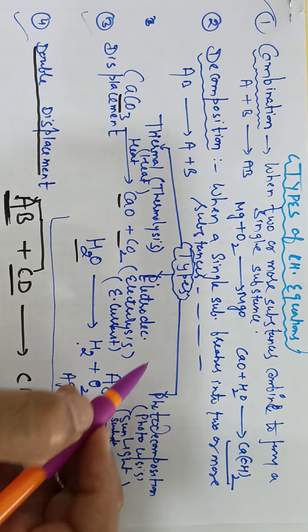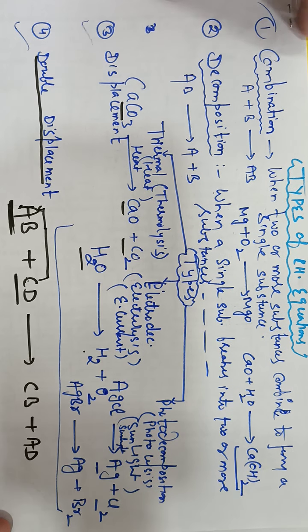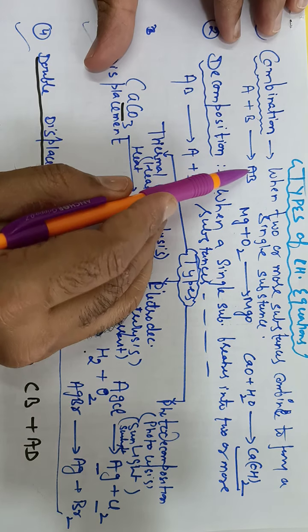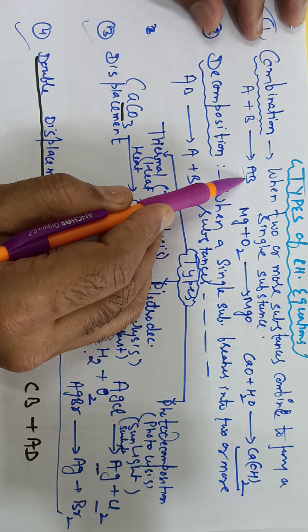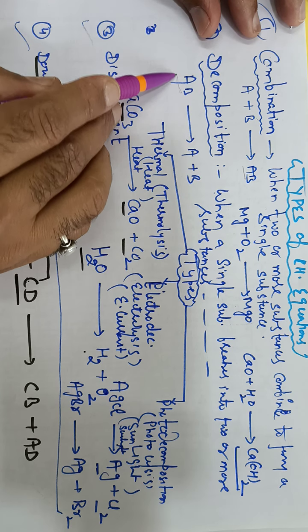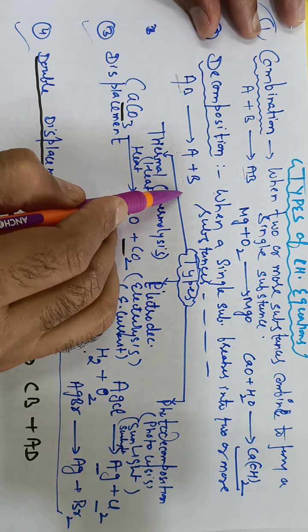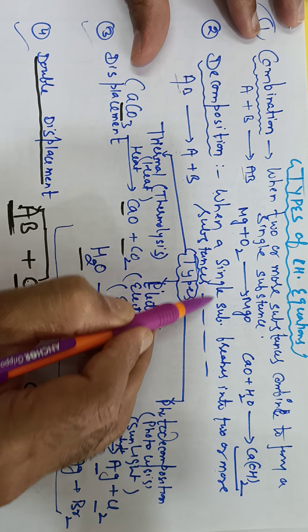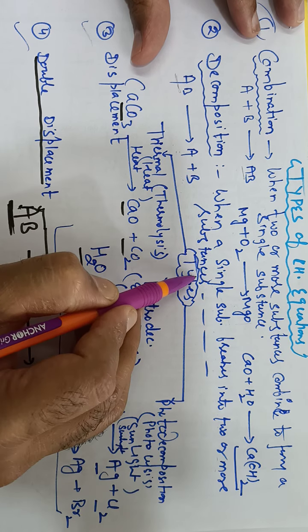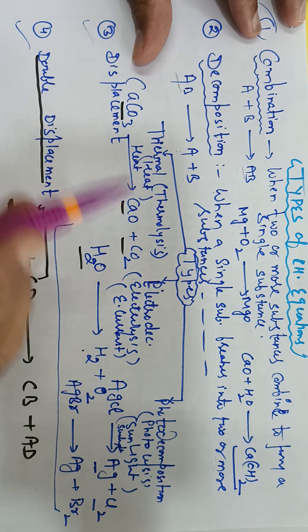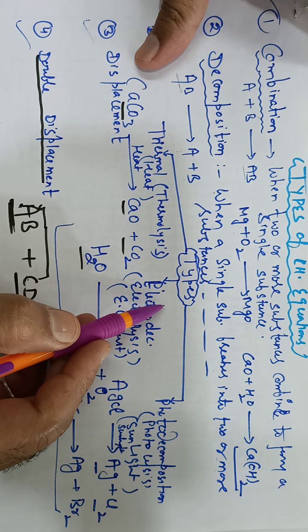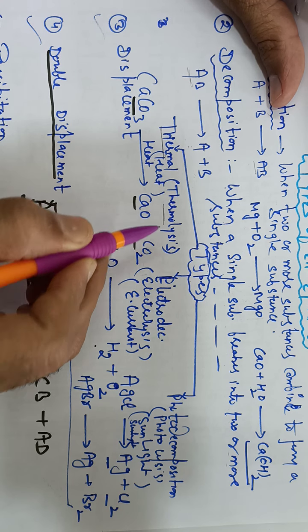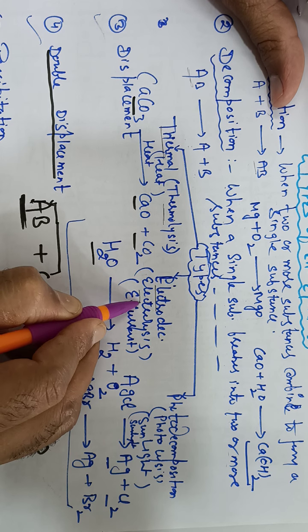Next type of reaction is decomposition reaction. Single reactant to two or more products. Three types: 1. Thermal decomposition or thermolysis, 2. Electro decomposition or electrolysis, 3. Photo decomposition or photolysis.